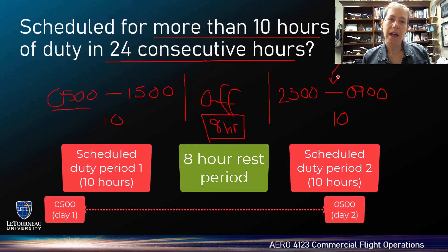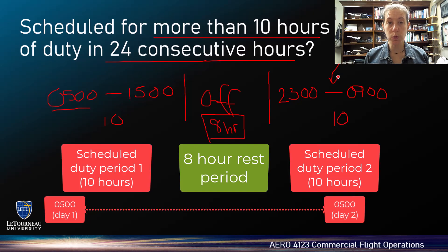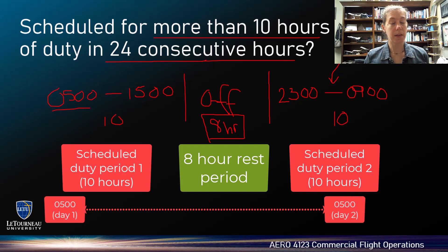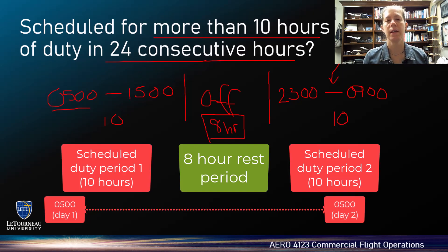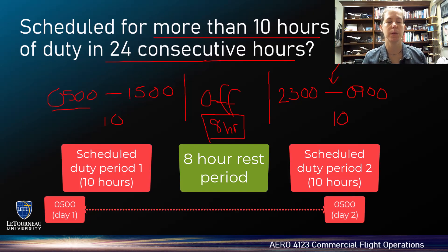Most airlines — not all, but a lot — are unionized, so dispatchers are going to have their own work rules and probably won't have a schedule like this. But we're talking about legalities here, not necessarily what the real world actually does. That scheduled-for-more-than-10-in-24 concept is what confuses people, so hopefully that explanation helps.